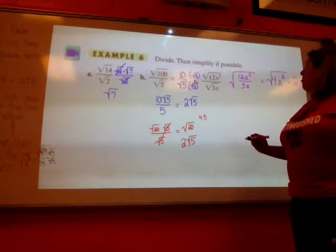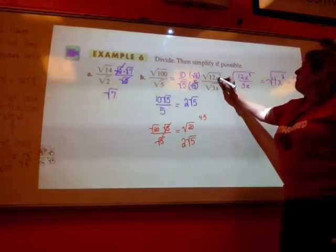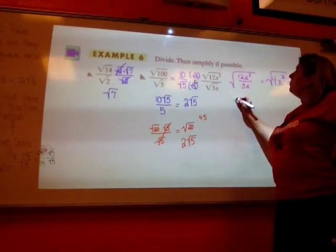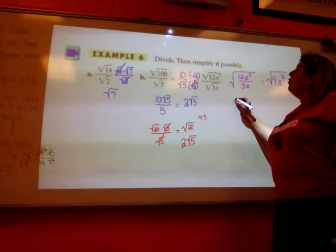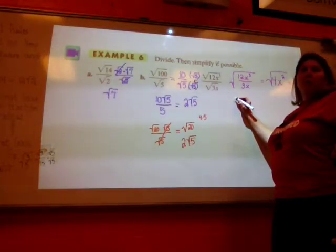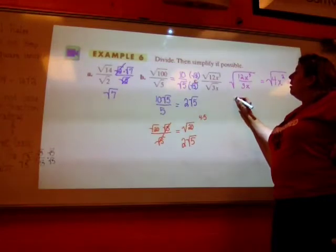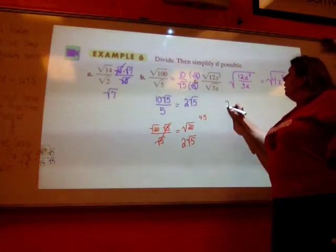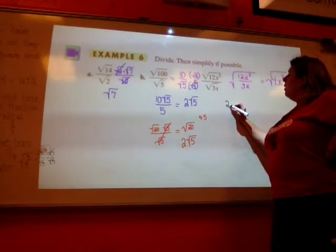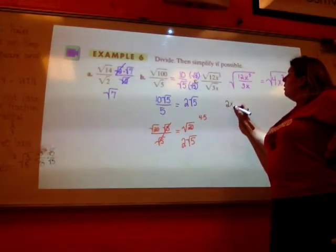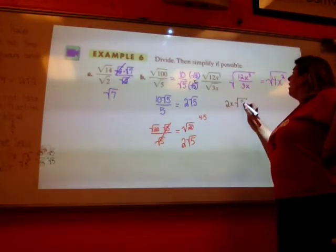What did you do, ma'am? I made 12x to the third of 2x to the square root of 3. 2 square root of x? 2x to the third of 2. You make this 2 square root? 2x to the square root of 3. 2x to the square root of 3x.